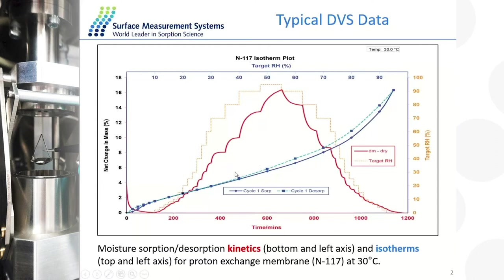The solid line is the sorption or increasing relative partial pressure, and the dotted line is the desorption or decreasing relative partial pressure. The isotherm shape, size, and what's called the hysteresis — which is the difference between the sorption and desorption isotherm at a particular relative humidity — can give us a lot of information about how the vapor interacts with the material. In this case, we're just looking at a Nafion proton exchange membrane, looking at moisture on and off this particular sample.